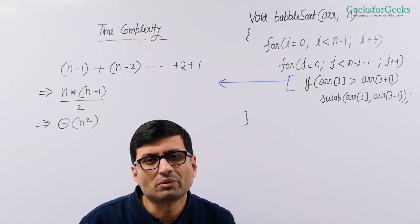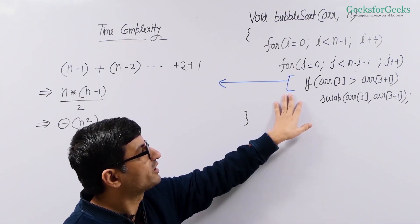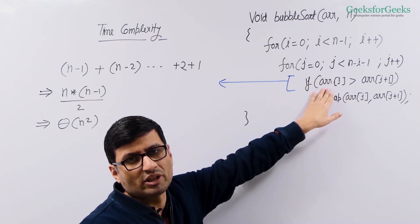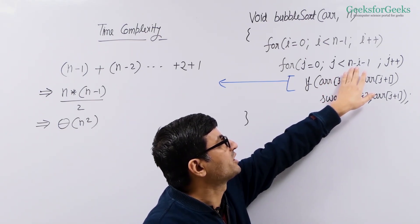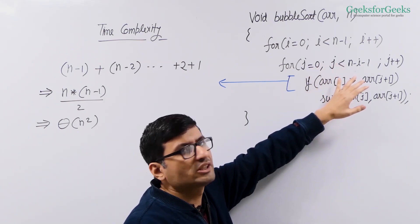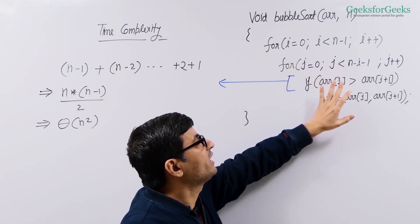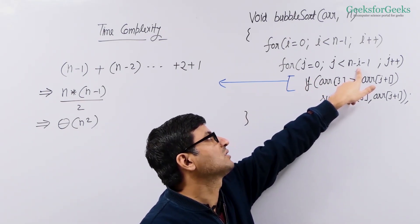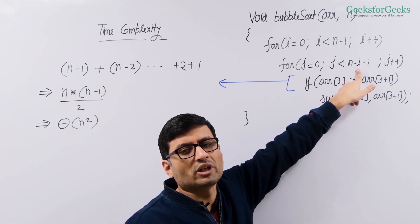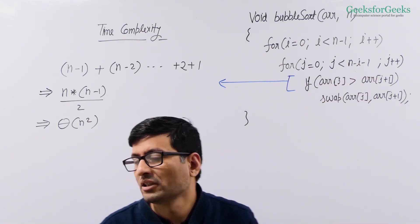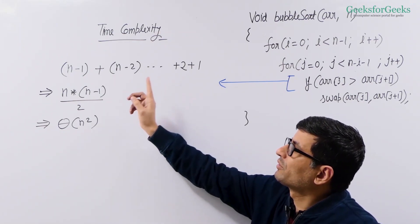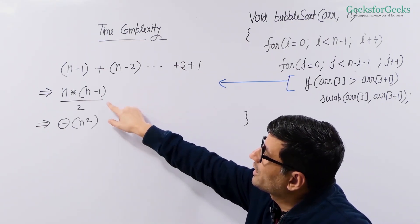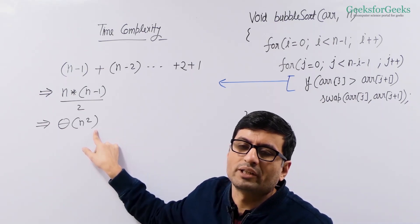Let us analyze the time complexity of bubble sort. This comparison statement executes the maximum number of times. For i equal to 0, it runs n minus 1 times. For i equal to 1, it runs n minus 2 times. For i equal to 2, it runs n minus 3 times. When i is n minus 2, the sum of this series is n times (n minus 1) divided by 2. So the time complexity of this implementation is Theta of n squared.